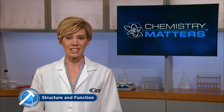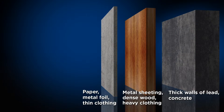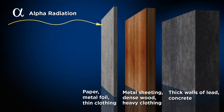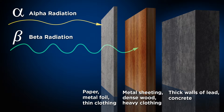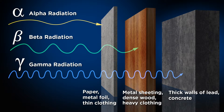Gamma radiation is very high energy with no mass, and since it's a type of light energy, it travels at the speed of light. Because of its energy and speed, it can penetrate human tissue and be damaging. Alpha particles are the heaviest and slowest radioactive particles — you can be shielded from them easily by thin metal foils, skin, or even paper. Beta particles are faster and more energetic than alpha particles but slower than gamma rays; they cannot penetrate metal sheets at least a half centimeter thick, dense wood, or even heavy clothing.